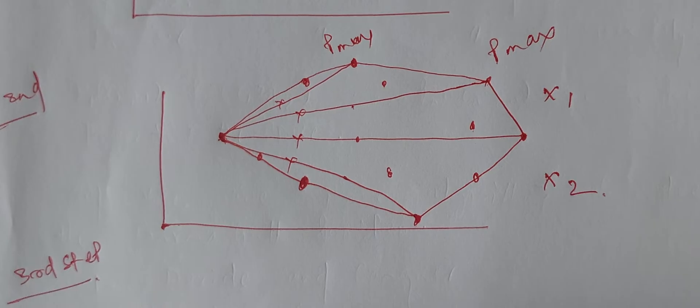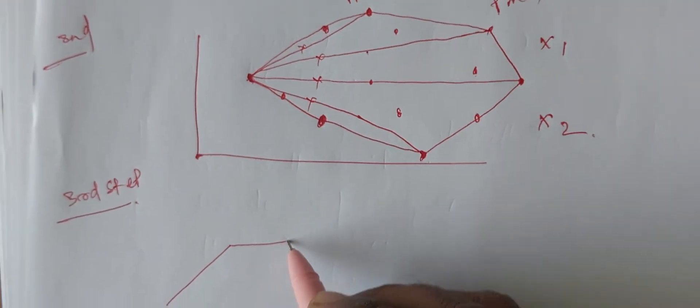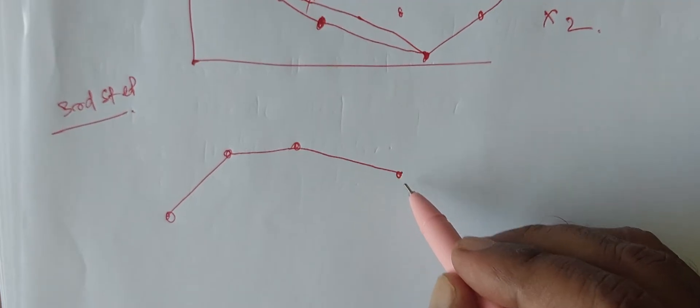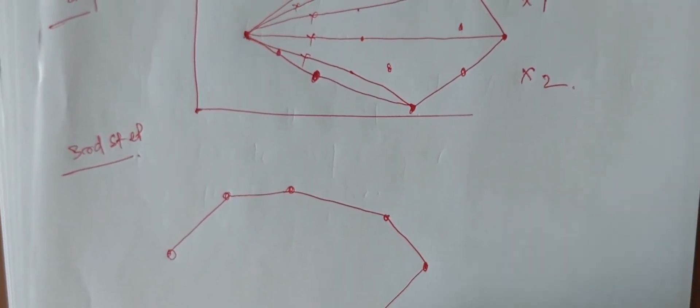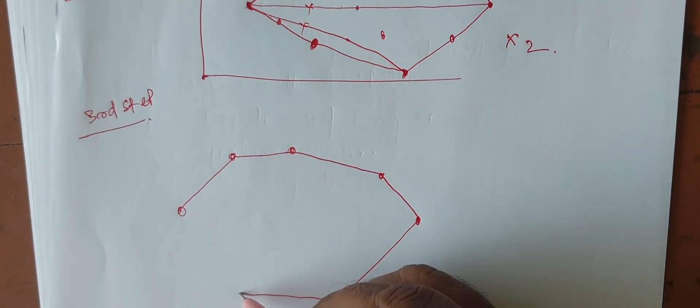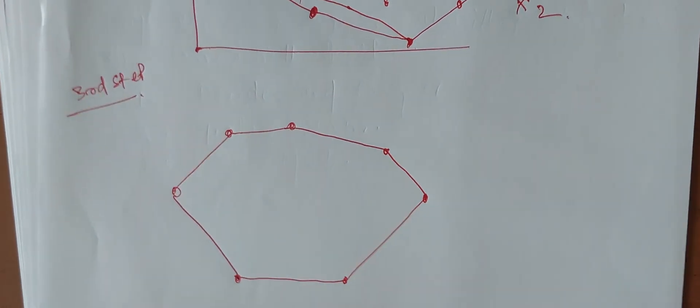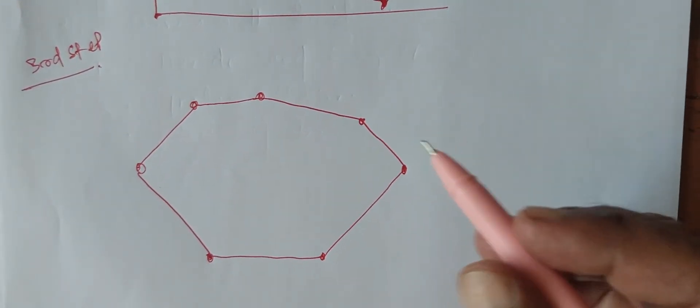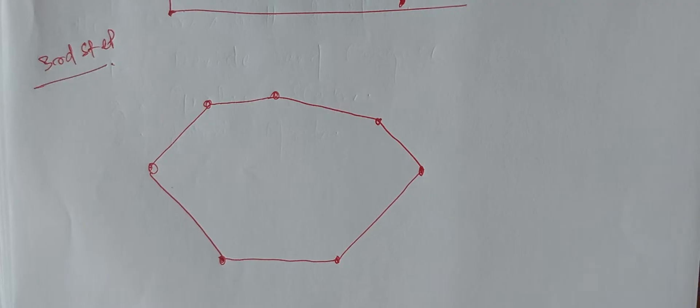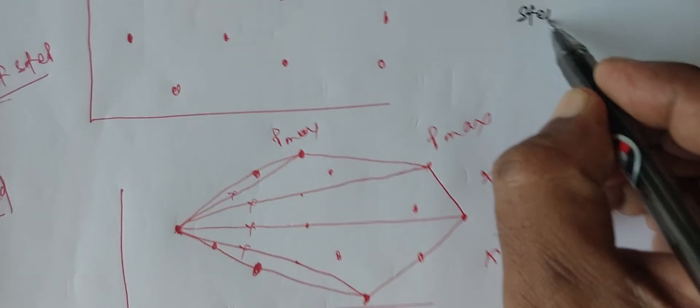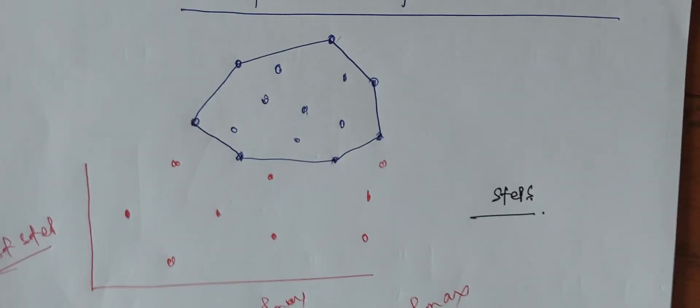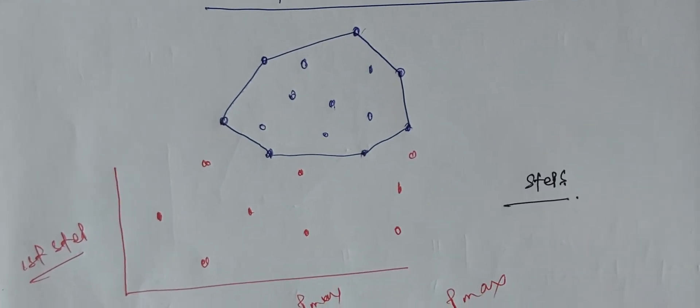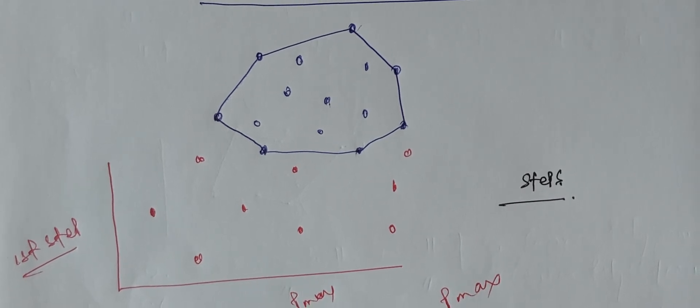So that my point connecting polygons will be like this. This will be my final polygon I am getting here where all the points will be included inside it. Some steps I am writing here.